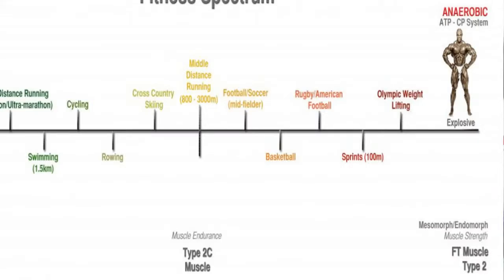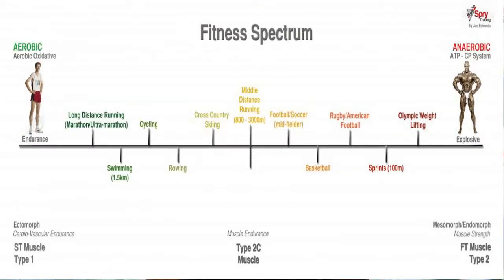Coming to the right of the spectrum, I've got bodybuilders, and even more explosive than a bodybuilder is a powerlifter and strongman. On this right side, people are more type 2 dominated — very explosive. The energy pathway used here is ATP, which basically uses the glucose stored within the muscle for a very short period of time. Sprinters are on this side.